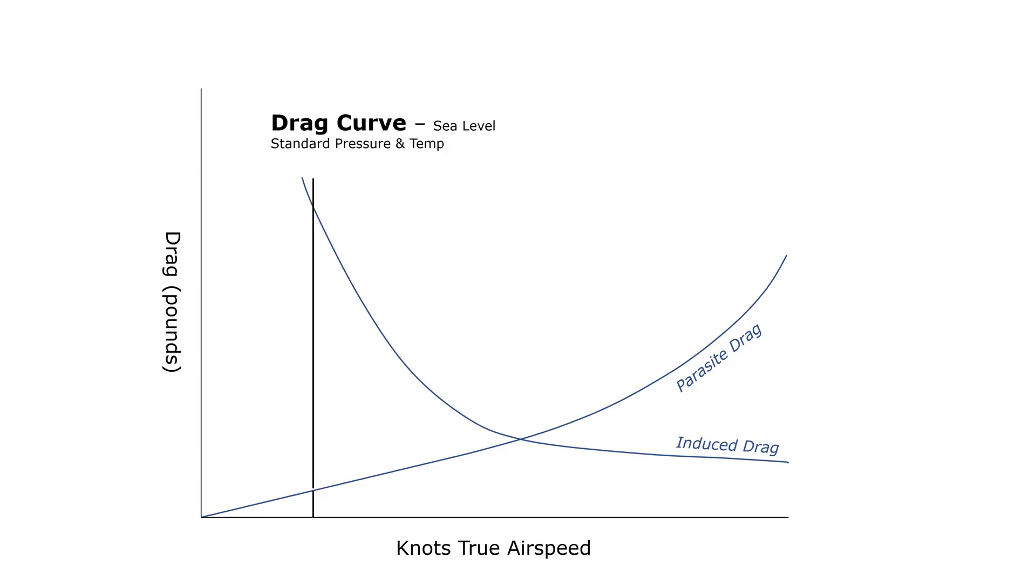We'll start here at what we can think of as our minimum speed—it has nothing to do directly with drag, but it's our stall speed. If we move this line, which is the sum of the two drags, and draw it across, we get a U-shaped curve, which is our total drag curve.